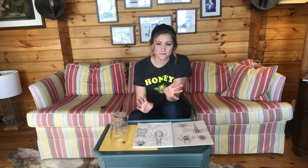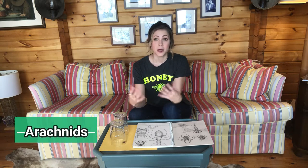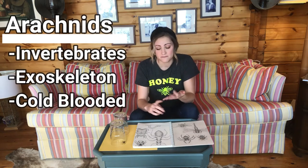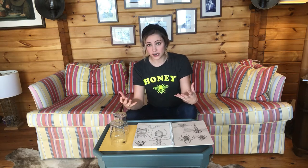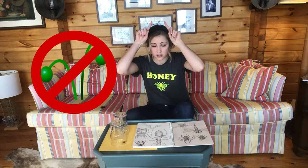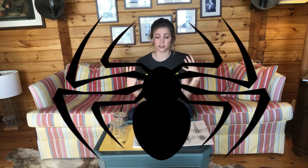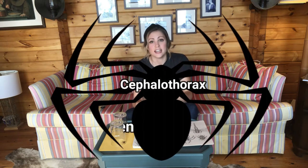You might be saying, 'But Jen, what about spiders?' Don't worry — spiders actually are not insects. They belong to a different group called arachnids. Like insects, arachnids are invertebrates with no spine and an exoskeleton, and they're cold-blooded. However, what makes them different is that they don't have antennae, don't have wings, have eight legs instead of six, and their body is broken into two sections: the cephalothorax — which combines the head and thorax — and the abdomen.